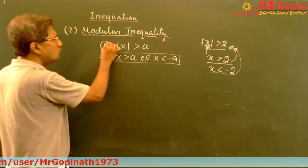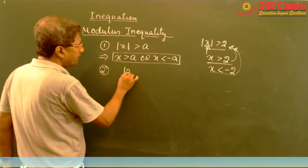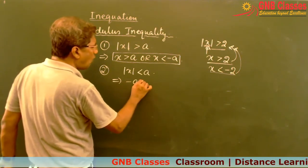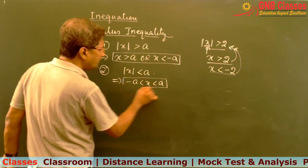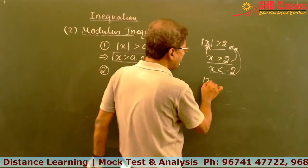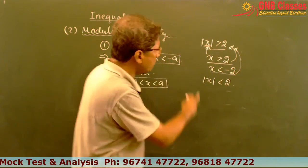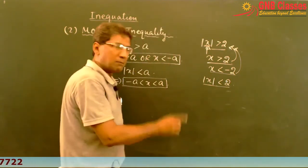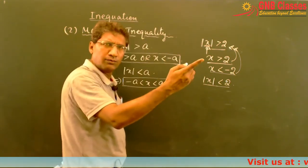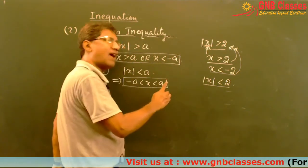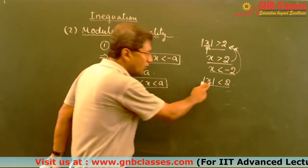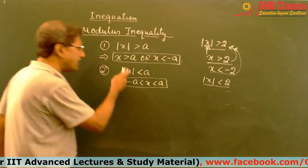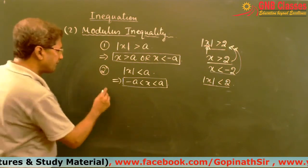The second formula: if mod x is less than a, then x will always lie between minus a and a. You can check it — let's say mod x is less than 2. Any value between minus 2 and 2 will satisfy this, but the moment you take any value more than 2 or less than minus 2, it will not satisfy this inequality. So the formula is: minus a less than x less than a.